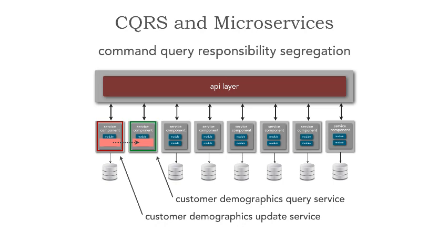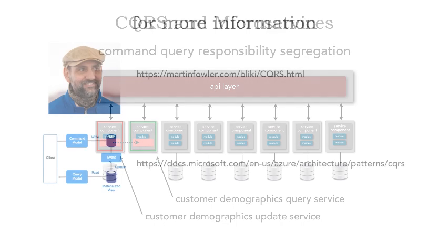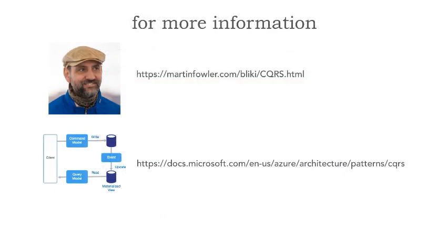Now we have two services that are fully optimized for query and update, with a single source of record. We can scale and optimize each for maximum performance. This is a great example of how to leverage CQRS in a microservices ecosystem. For more information about CQRS, you can go to Martin Fowler's website under his bliki at cqrs.html. From a Microsoft .NET perspective, for implementing this pattern within Azure, you can go to the Microsoft.com link provided. This is a pattern I've been thinking about for 15 years but never really had an opportunity to implement until microservices really came about.